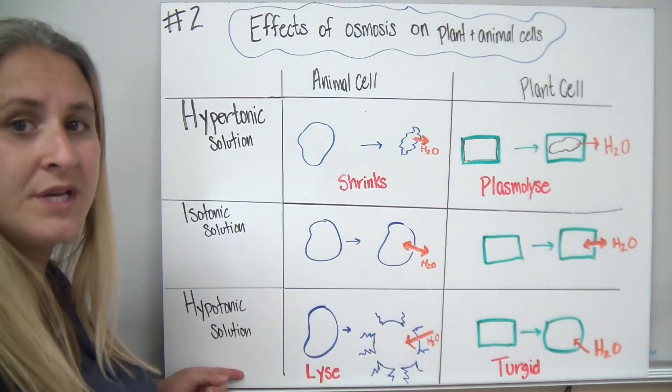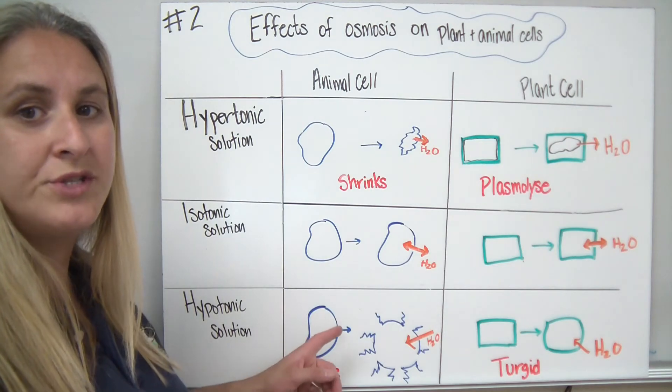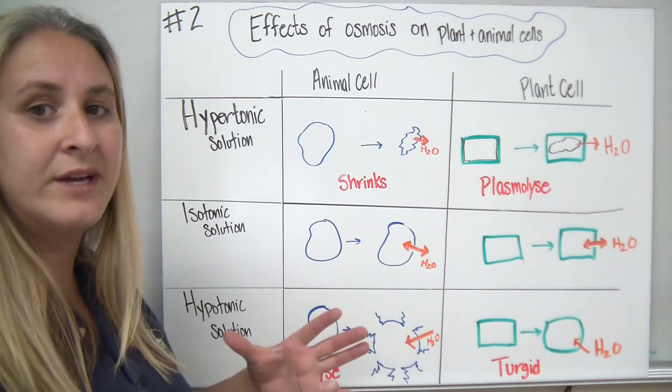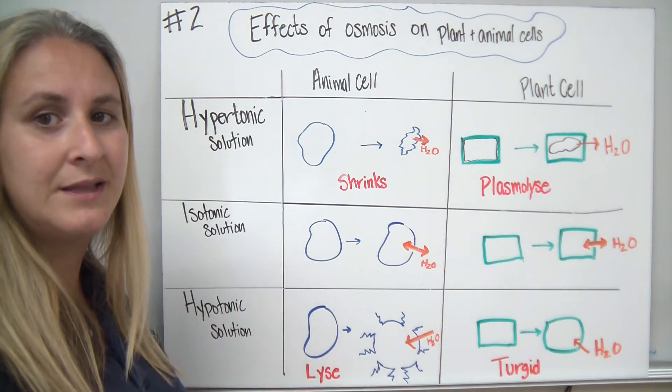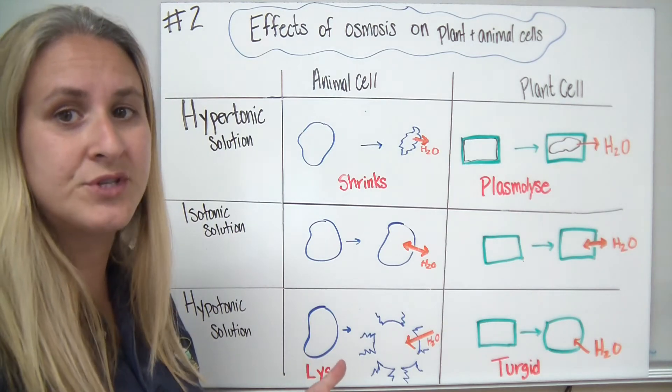In a hypotonic solution, remember, the hypotonic solution will cause water to diffuse into the cells. In the case of an animal cell, it will actually do something called lyse, L-Y-S-E, lyse. And that basically means to swell and burst.